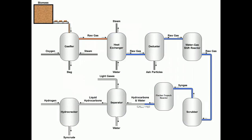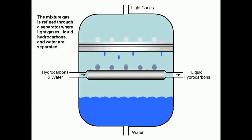The produced hydrocarbons and water are sent to a separator. The mixture is refined through a separator where light gases, liquid hydrocarbons and water are separated.